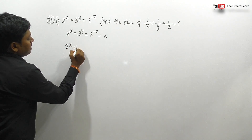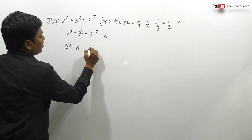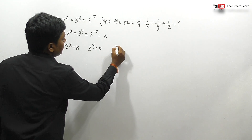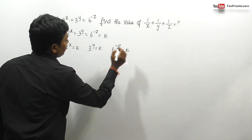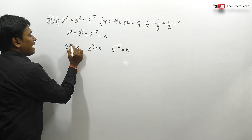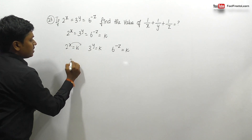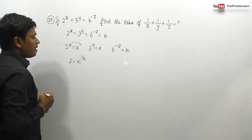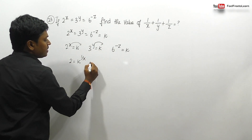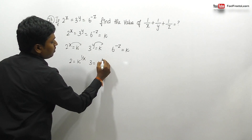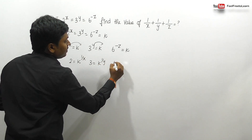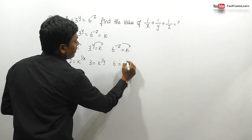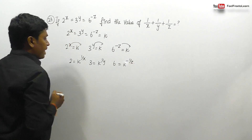So 2^x = k, 3^y = k, and 6^(-z) = k. When we bring x to the right-hand side, this gives 2 = k^(1/x). Similarly, 3 = k^(1/y), and bringing z to the right-hand side gives 6 = k^(-1/z).